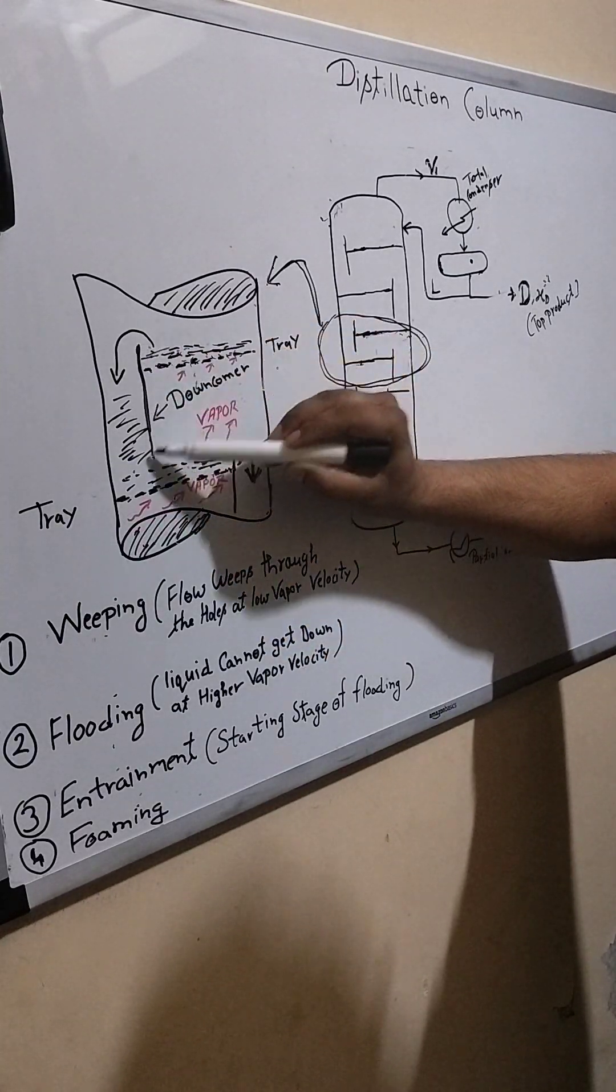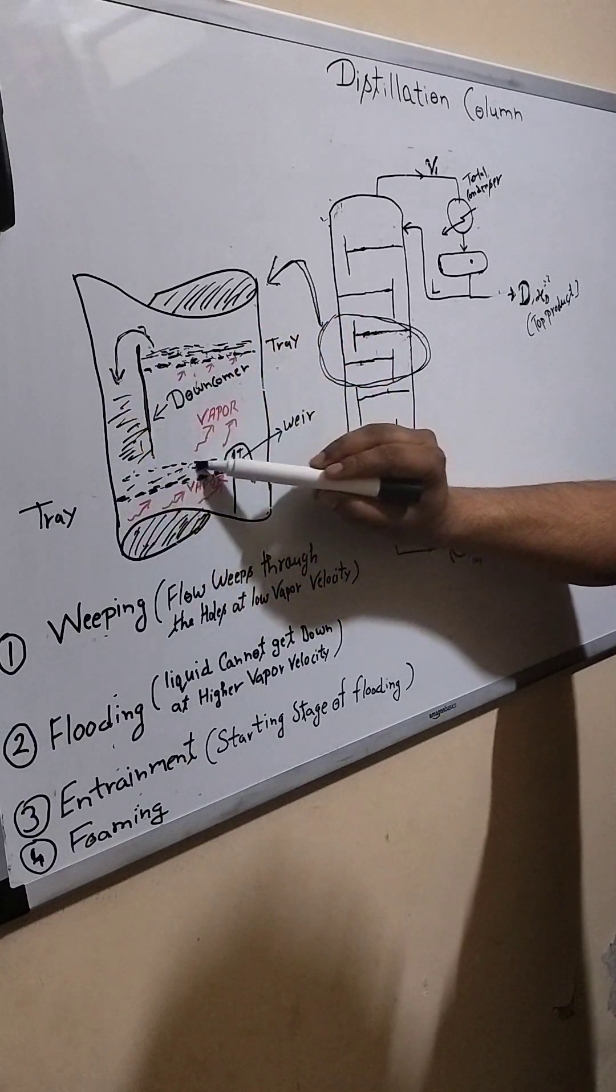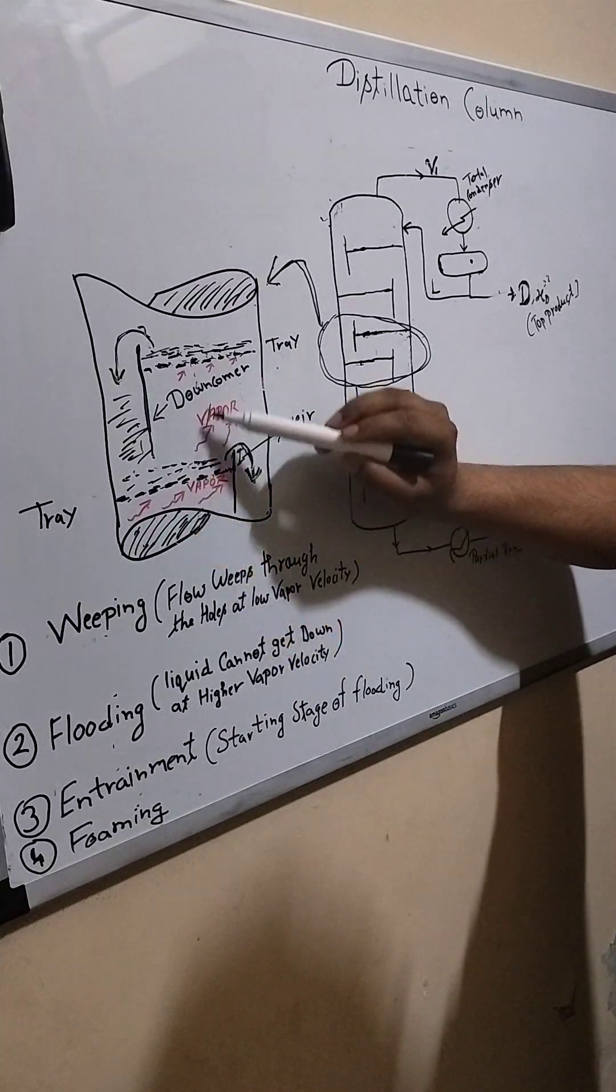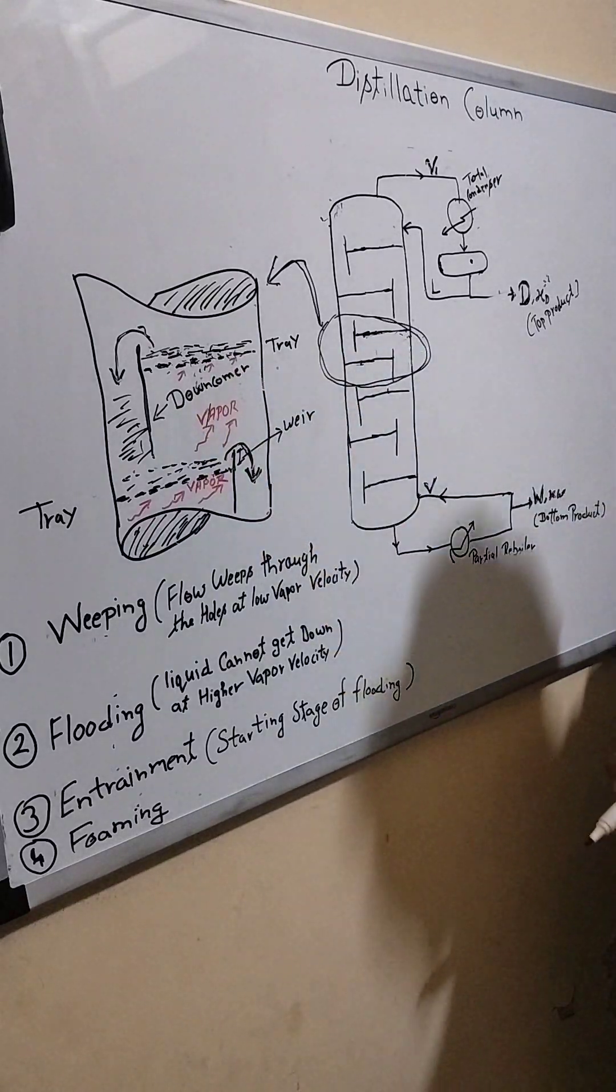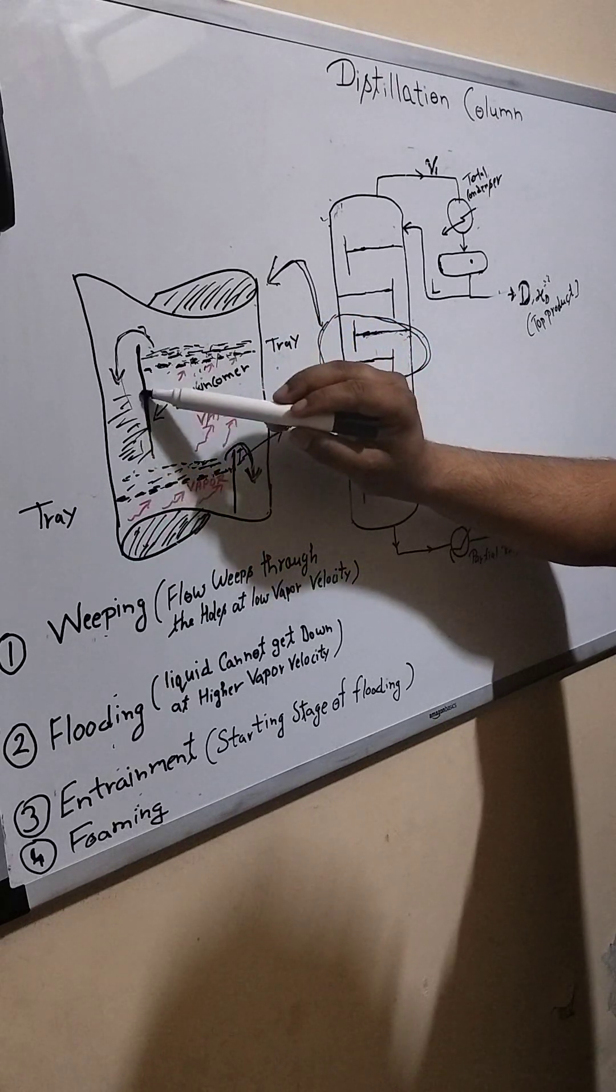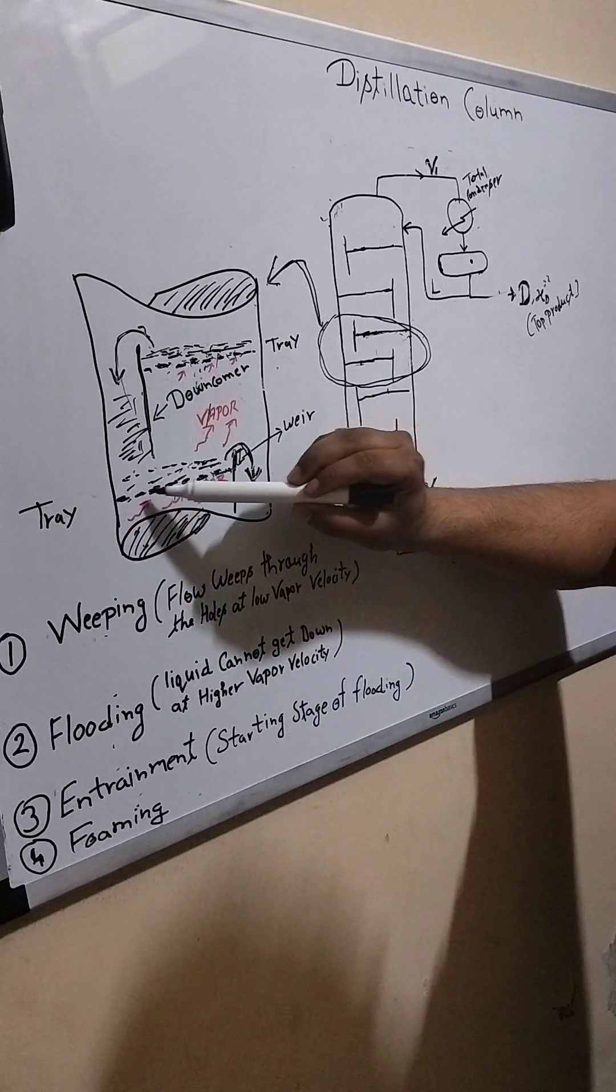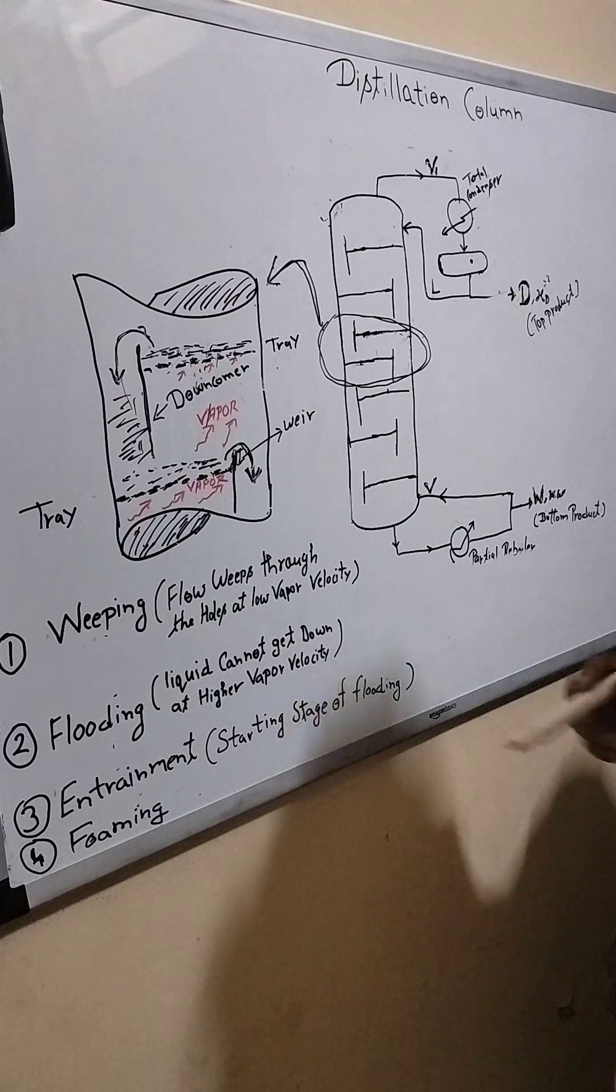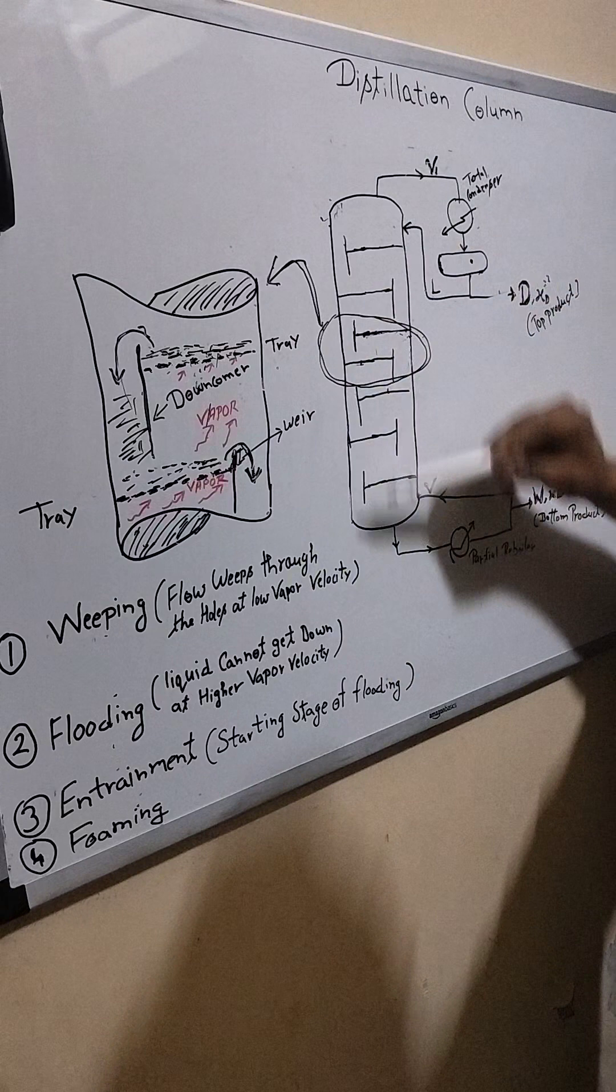It is the downcomer through which liquid will come down. It will come down and the vapor will flow through these holes. In general, vapor will flow and liquid will go downward through this downcomer. This is a tray, perforated tray, and this is a weir.